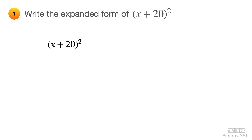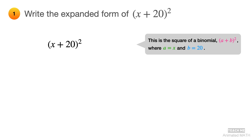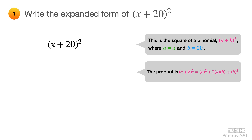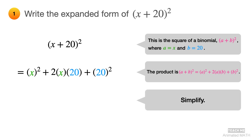This binomial follows the perfect square add times add pattern, which is (a + b)². Here a is equal to x and b is equal to 20. Its product is a² + 2ab + b². Substitute x for all a's and 20 for all b's, then simplify the expression. The final answer is x² + 40x + 400.